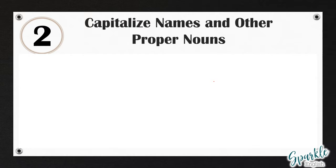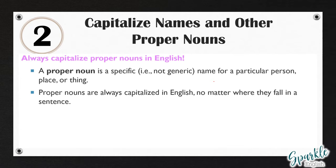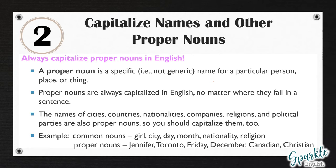The second rule is you always need to capitalize names and other proper nouns. Always capitalize proper nouns in English. A proper noun is a specific — not a generic — name for a particular person, place, or thing. Proper nouns are always capitalized in English, no matter where they fall in a sentence. The names of cities, countries, nationalities, companies, religions, and political parties are also proper nouns, so you should capitalize them too.